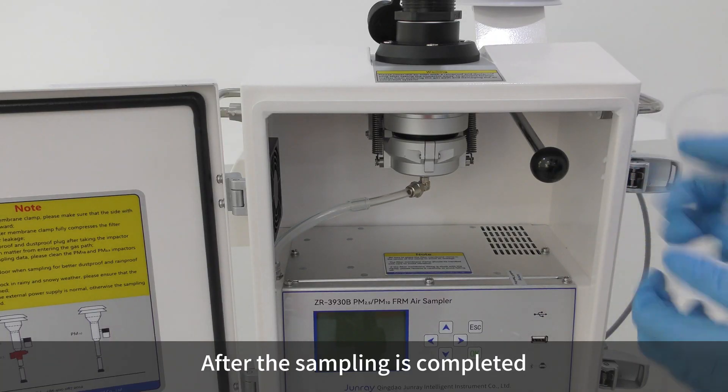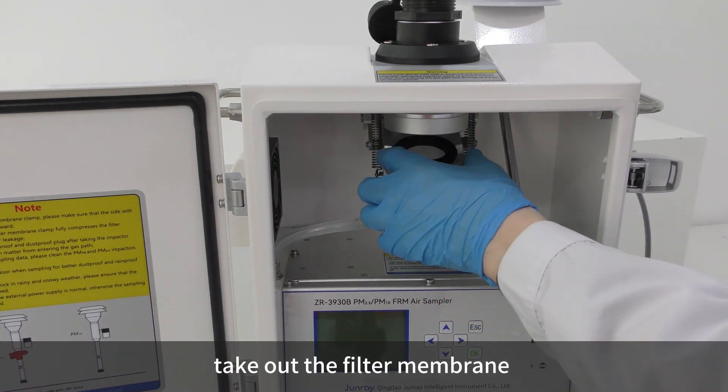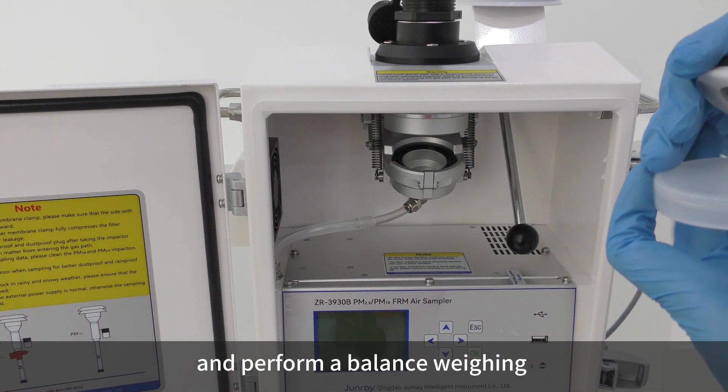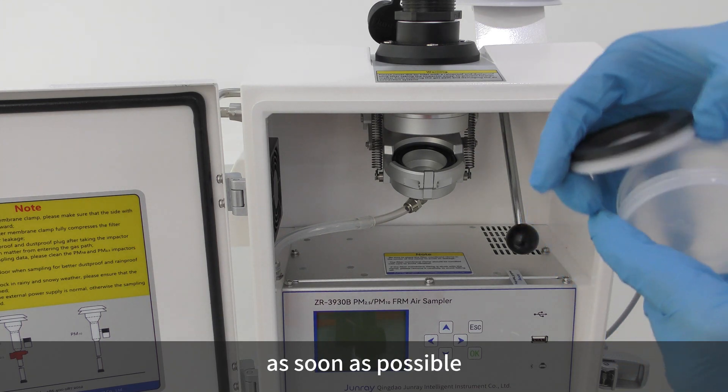After the sampling is completed, take out the filter membrane and put it into the storage box, and perform a balance weighing as soon as possible.